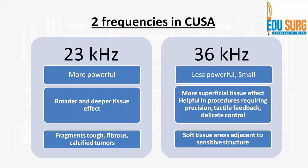There are many frequencies used in CUSA with newer machines, but two standard frequencies used previously include 23 kilohertz and 36 kilohertz. 23 kilohertz is more powerful and has a broader and deeper tissue effect, whereas 36 kilohertz is used in soft tissue areas as it is less powerful but has more precision with tactile feedback and fine control. It is routinely used in areas with sensitive structures.